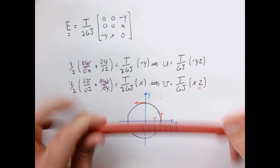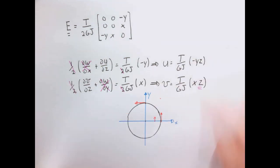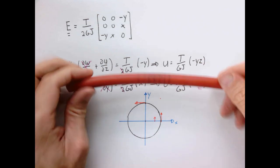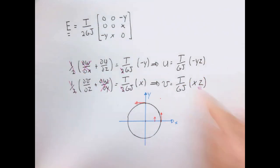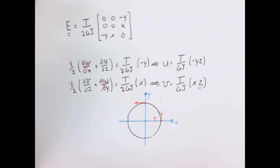This is only a small strain limit because as the points wrap around, we would need more complexity in our formula. That wraps up our tensor view of a bar in torsion. We really didn't learn anything new — we're just making a connection from a more formal tensor formulation to things we already know.